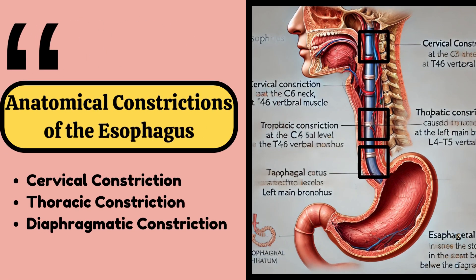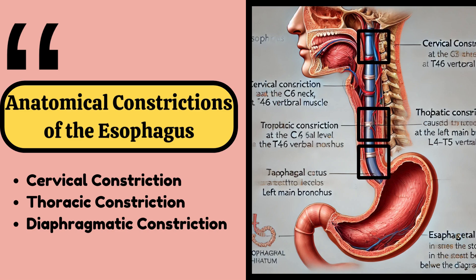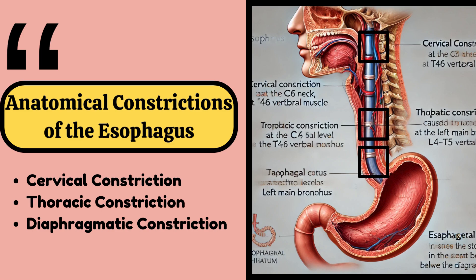In this video, we will talk about the normal anatomical constrictions of the esophagus. These include cervical constriction, thoracic constriction, and diaphragmatic constriction.